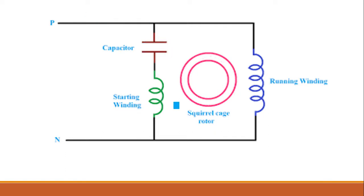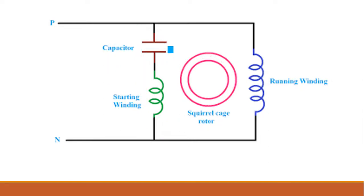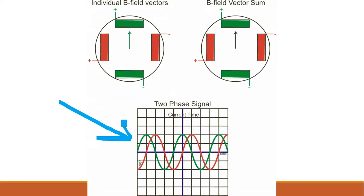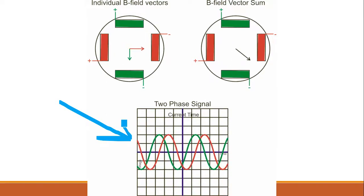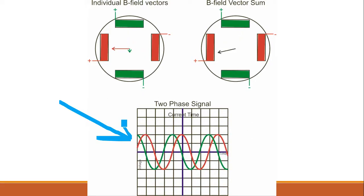To make the single-phase motor self-starting, we add a phase-shifting winding. It is called a shifting winding because the current through the capacitor is leading. So effectively there are two currents with a phase difference — the capacitor current leads, and the main winding current lags. Looking at the graph, the green colored waveform is the leading starting winding current, and the red is the lagging main winding current — these are effectively two-phase currents.